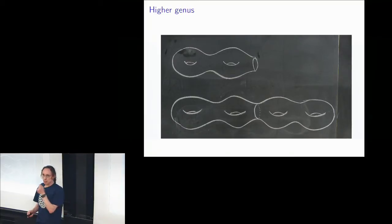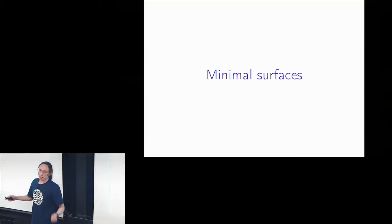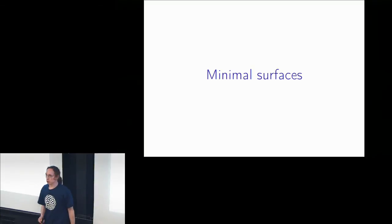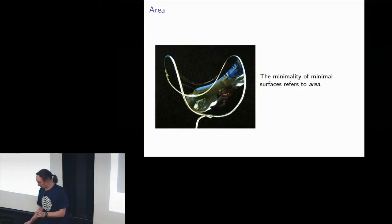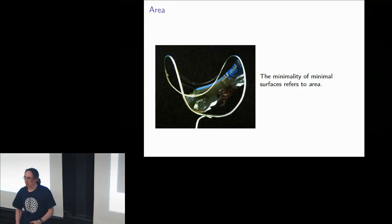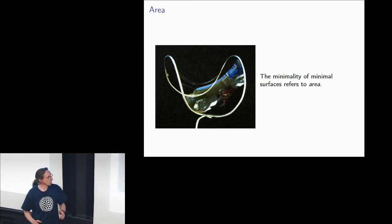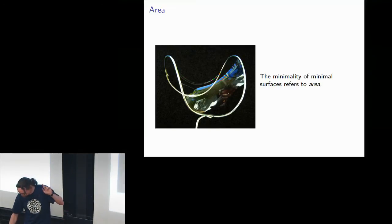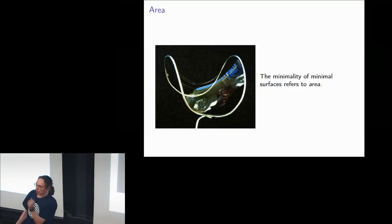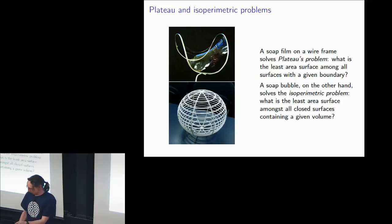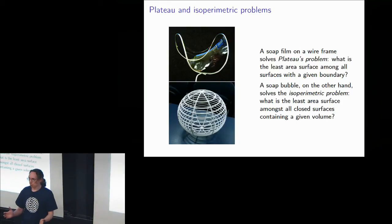Let me talk about how surfaces come up in geometry. These are often called minimal surfaces. When we talk about minimal surfaces, the thing that we're minimizing is area. There are two major ways to talk about area: Plateau's problem and the isoperimetric problem — soap films and soap bubbles.